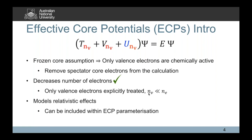We can also derive effective core potentials to include the vast majority of scalar relativistic effects, so we can include relativistic effects within the ECP parameterization. This is quite interesting — we're not suddenly solving the Dirac equation when we use ECPs. We're still solving a non-relativistic Schrödinger equation, but we can get relativistic effects incorporated by parameterizing our effective core potential. The introduction of ECPs introduces a new ECP operator U, which also operates over only the valence electrons.